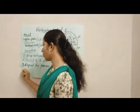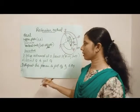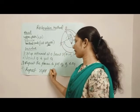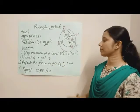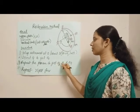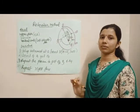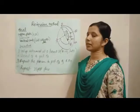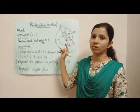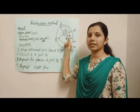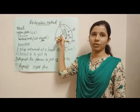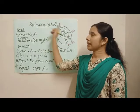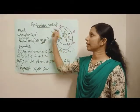The fourth step: repeat the entire procedure when the instrument is on the right face. Again, get the values of theta 1, theta 2, theta 3, and theta 4. This completes the re-iteration method, which is used when several angles are measured successively from a single point.